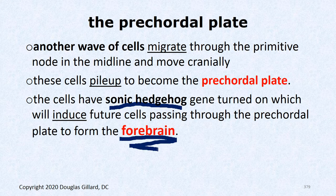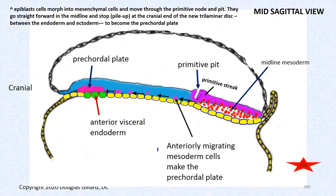So the pre-chordal plate is beneath the anterior visceral endoderm, and we get mesoderm forming around it. This is a mid-sagittal cut — if we did a parasagittal cut you'd see all three layers everywhere. In the mid-sagittal cut we don't have mesoderm forming in the very midline because cells are streaking forward to form different structures.